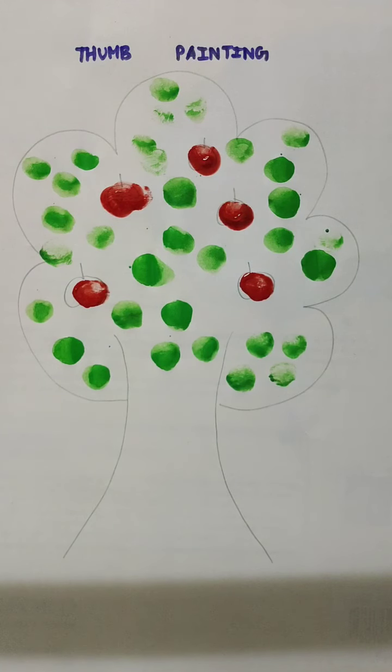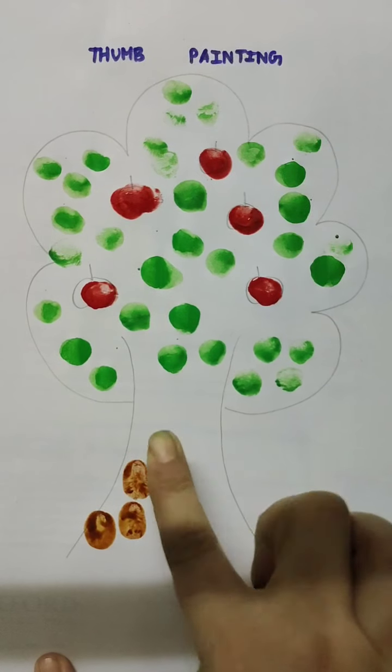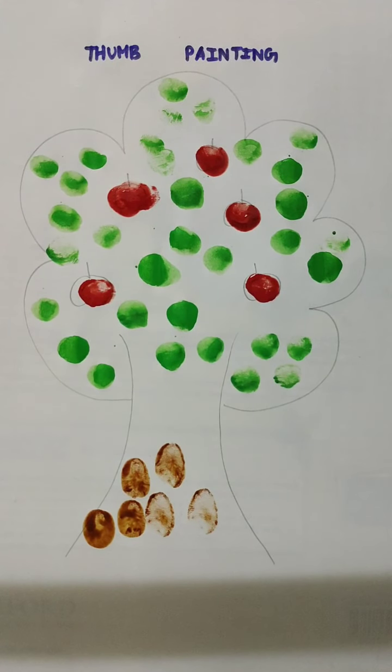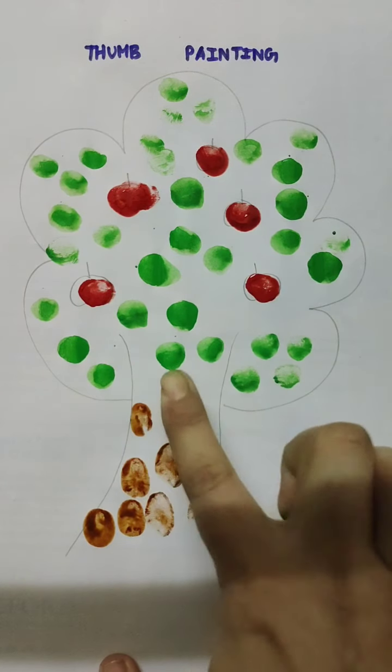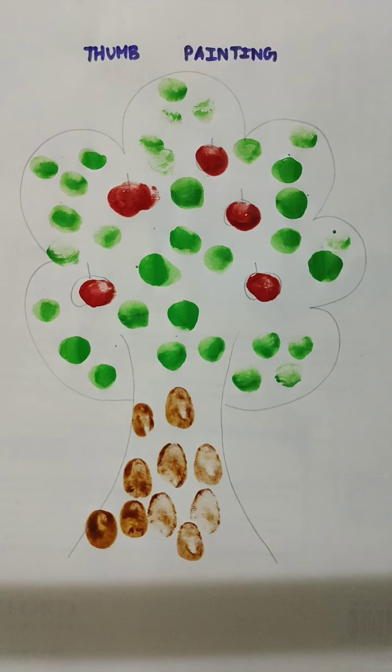And last but not least, I will paint my tree trunk with brown color. You can do one more thing, children. You can use different fingers and your thumb. Now see, brown is coming very nicely because I have put the least amount of water here. Paint is more, water is less. So all my thumbprints are coming nicely in the brown color.